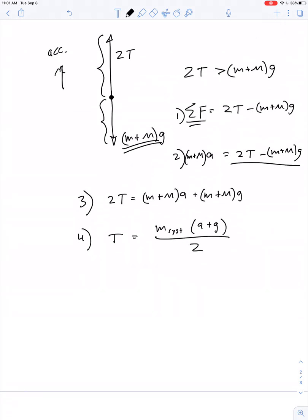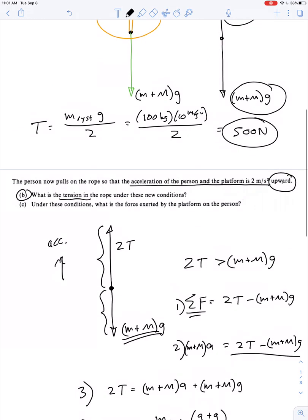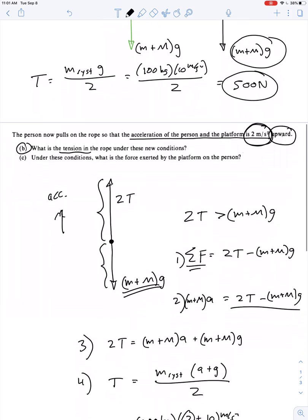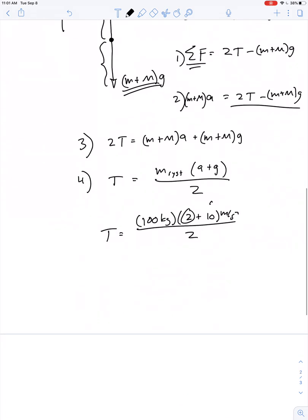So if we want the numerical value, it's 100 kilograms multiplied by 2 plus 10 meters per second squared all divided by 2. This 2, remember, was given in the problem - accelerating upward at 2 meters per second squared - and we're just letting g equal 10.